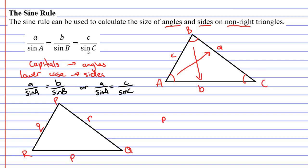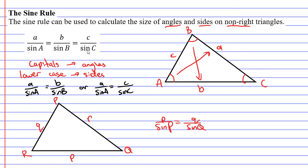And it would be P over sin capital P equals Q over sin capital Q. Or we could have little r over sin capital R equals little p over sin capital P and so on.